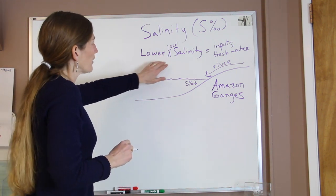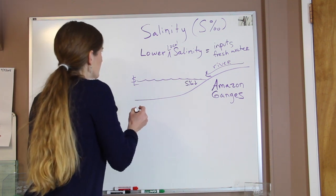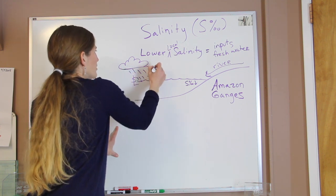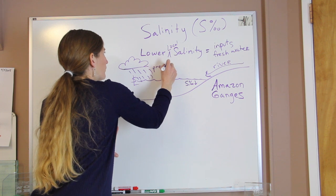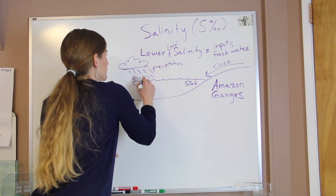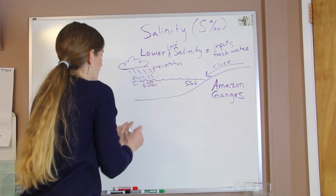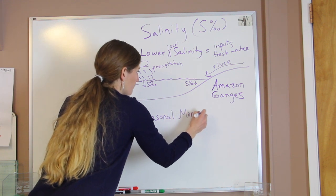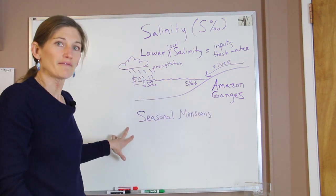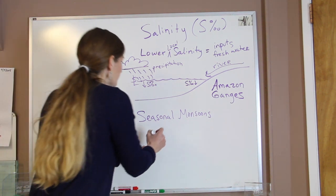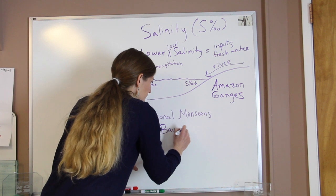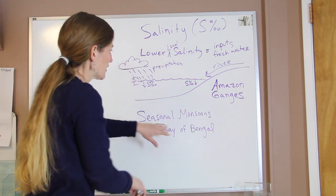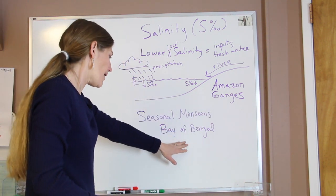Another way to have an input of fresh water is through heavy precipitation — that's also going to lower the salinity in an area. Our seasonal monsoons lead to a lowering of salinity in the places they occur. One place where this is really apparent is in the Bay of Bengal, where we have both river addition and monsoon rains, so we see definitely much lower salinity in that area.